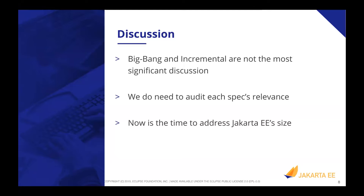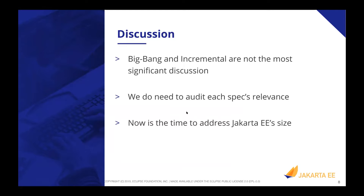A question came in: how would you suggest auditing each spec's relevance? There are 34 specifications and 34 Java packages. I think we need to divide and conquer. I would like to do a binary-level analysis — in the JCP process, many specs received maintenance updates to change text, but at a binary level the API stopped moving at a certain date. Getting help to analyze when was the last time the method signatures of an API changed would be valuable. We could take these 34 packages and do a binary diff between Java EE8, 7, 6, 5, 4 to figure out when something was last updated and assess its value.